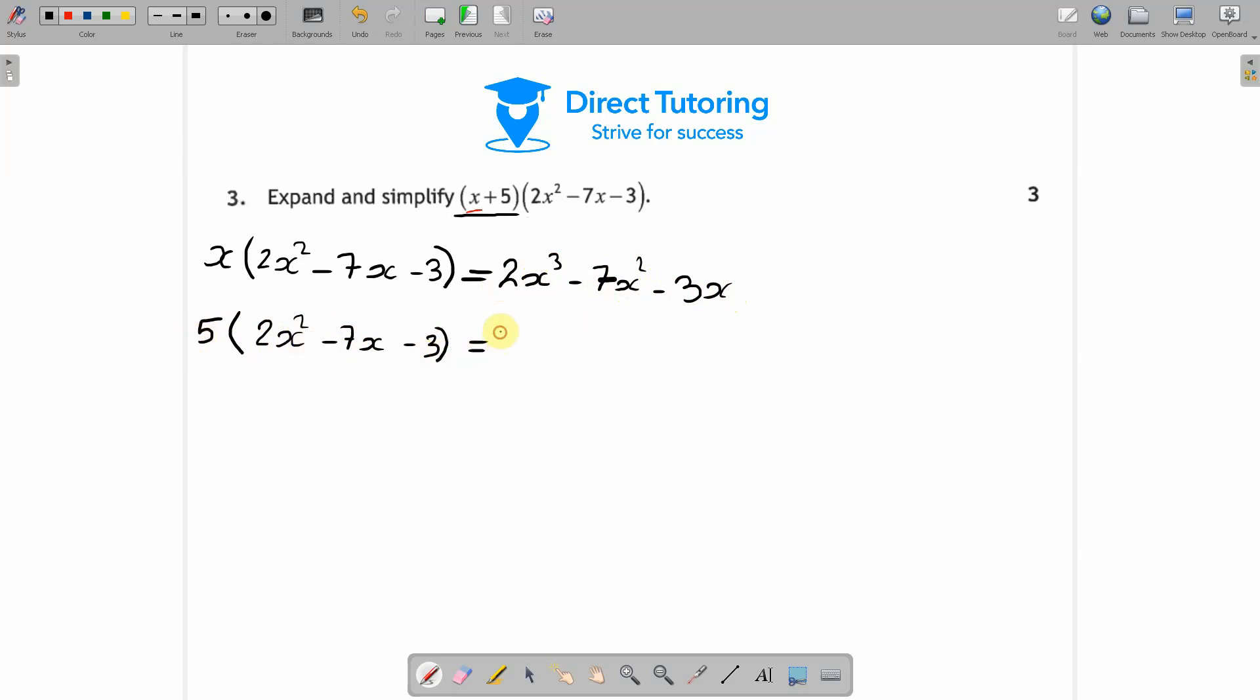And then we'll do the 5 times 2x² which will give you 10x². Then 5 times minus 7 is minus 35x. Then minus 15.